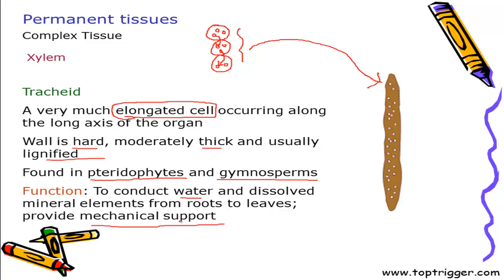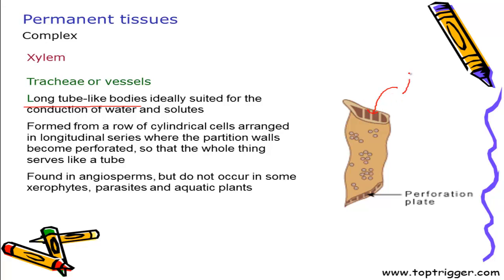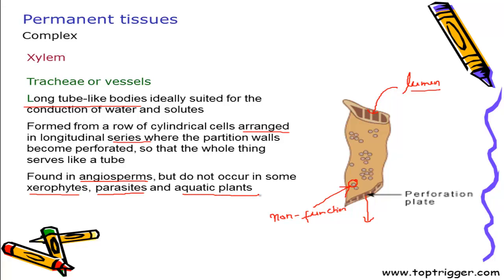After tracheids, we see another conducting tissue in the form of vessels. Vessels are long tube-like bodies and the conduction occurs through the lumen of the tube. Though pores are present, they are non-functional — vestigial in nature. Vessels are formed of a row of cylindrical cells arranged in longitudinal series and are primarily found in angiosperms. Interestingly, they are not found in xerophytes, parasitic plants and aquatic plants — their prime representation is in terrestrial plants.